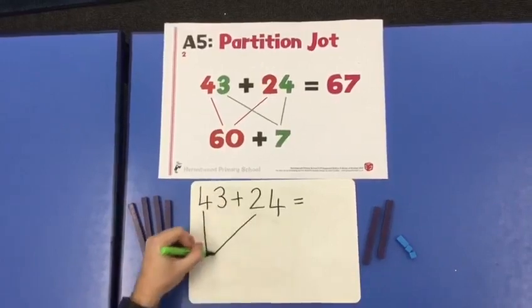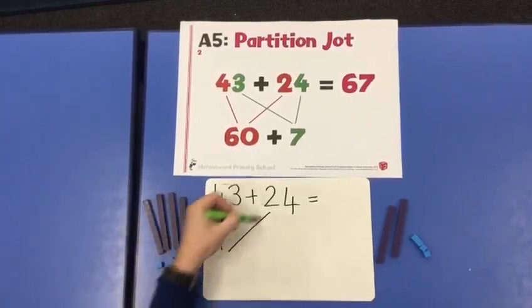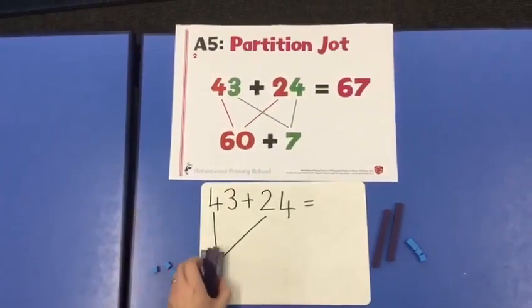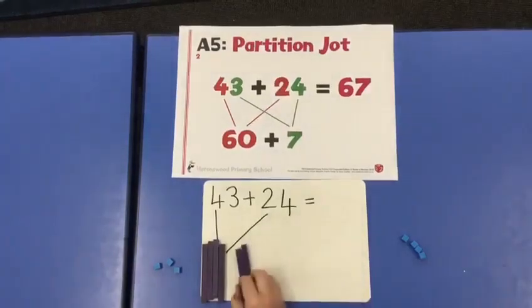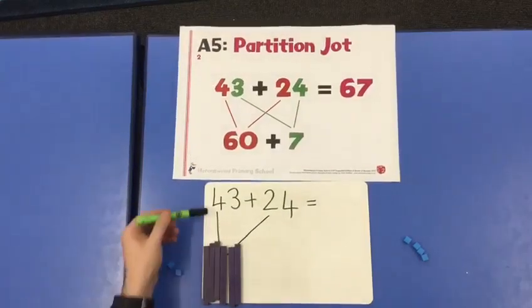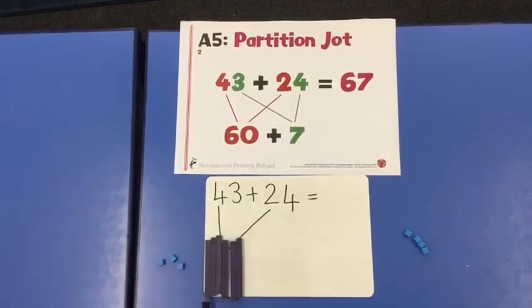So first what we'll do, we'll draw a line from the tens together. 4 tens add 2 tens. 4 tens add 2 tens equals 6 tens.